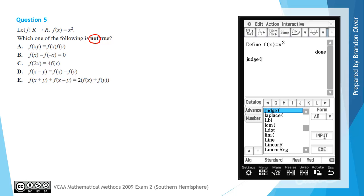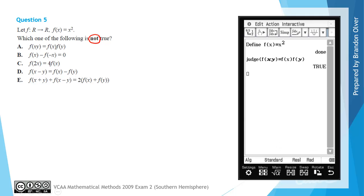For option A, we want to judge whether f of x plus y is equal to f of x multiplied by f of y. If we hit execute there, that says it's true. So we know that's not the answer to the question, as we're looking for something that's not true.